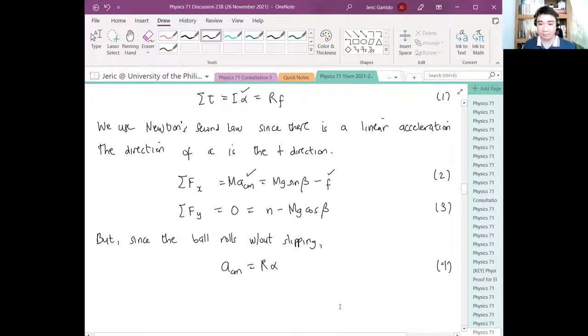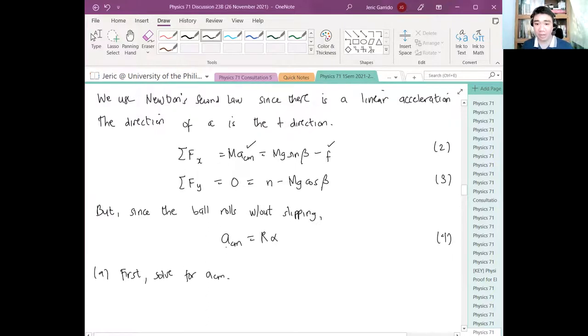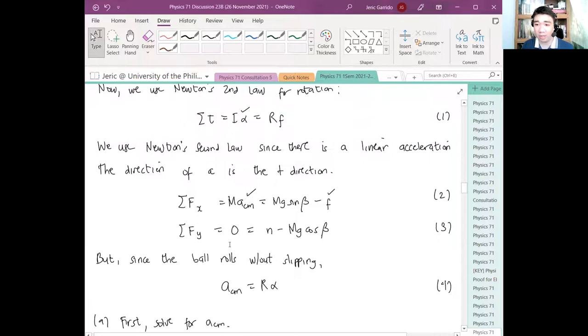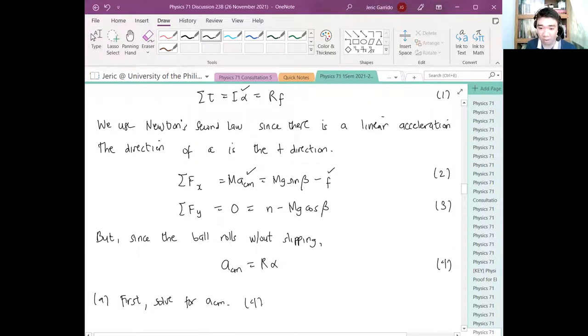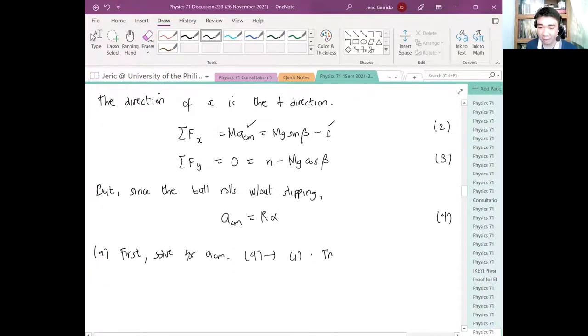Since the ball rolls without slipping, ACM equals R alpha. Let's say equation 4. Now we first solve for the acceleration because that's what's being asked. First, solve for ACM. How do we do this? What I will do is I substitute equation 4 to equation 1 to eliminate or express the acceleration of the center of mass in terms of frictional force.